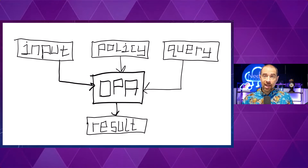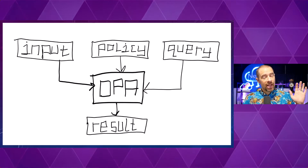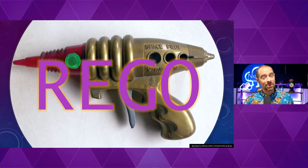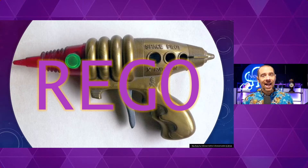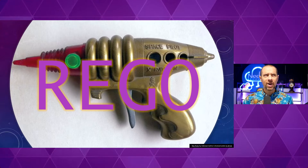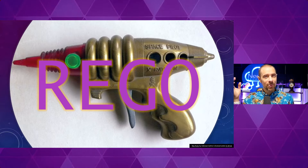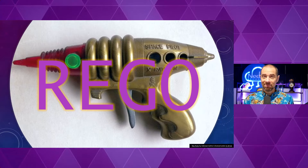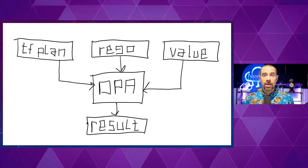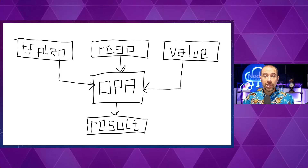Now, the question is what format is that policy written in? And the answer is it's yet another domain-specific language. So I'm sorry if you're sick of DSLs, but we've got another one for you. This one is called Rego. It's pronounced Rego — the easiest way to remember that is to think of a Regan. So Rego is the language, OPA is the solution. The policy going into OPA is written in Rego.